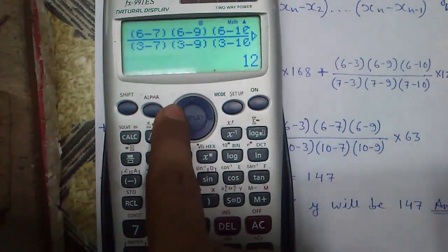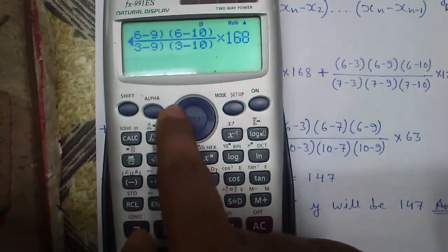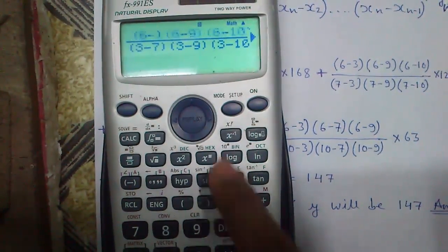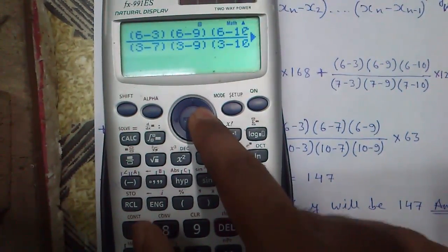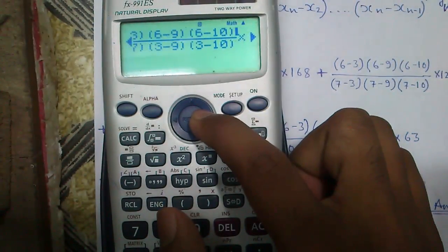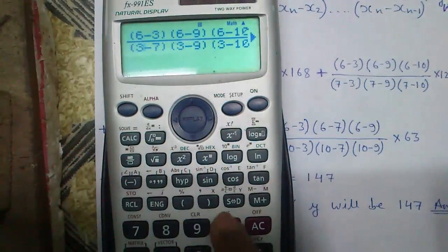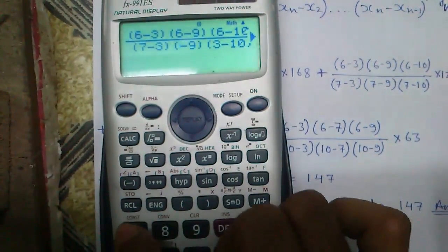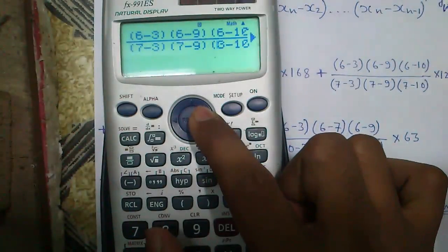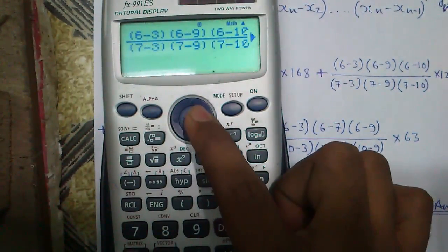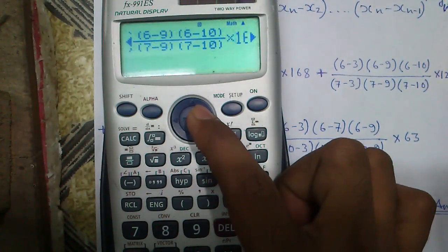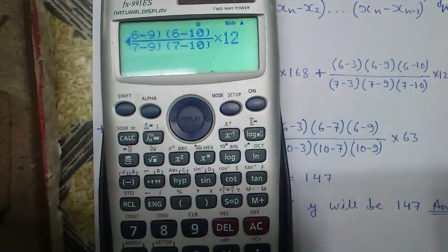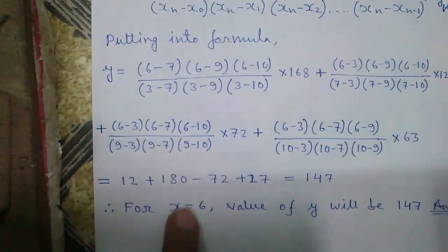Similarly for this, don't need to recreate the situation, just use the previous template. 6 minus 3, 6 minus 9 already there, and 6 minus 10 is also already there. So it is 7 minus 3, 7 minus 9, and 7 minus 10 times 120. That is 180.